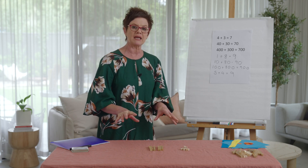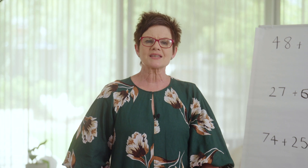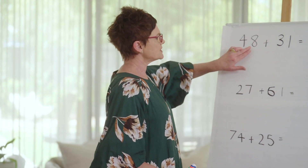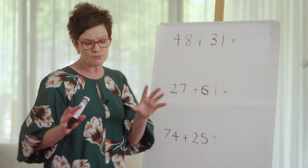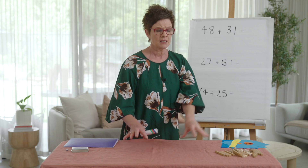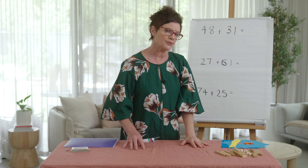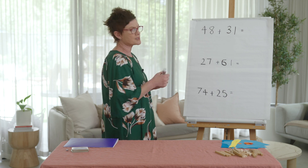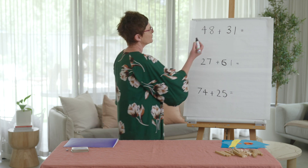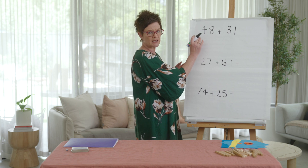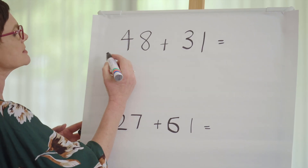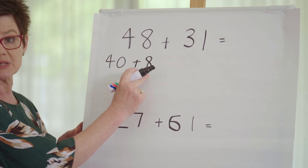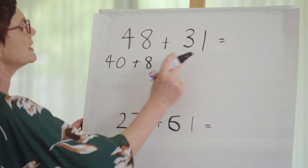Now let's see what that looks like when we make it and write it. Let's go through three examples. We have 48 plus 31. Remember, you can make these with your blocks and move them around for your own learning. I'm going to show you a different way of looking at this too. Let's partition 48 into tens and ones: 40 plus 8.